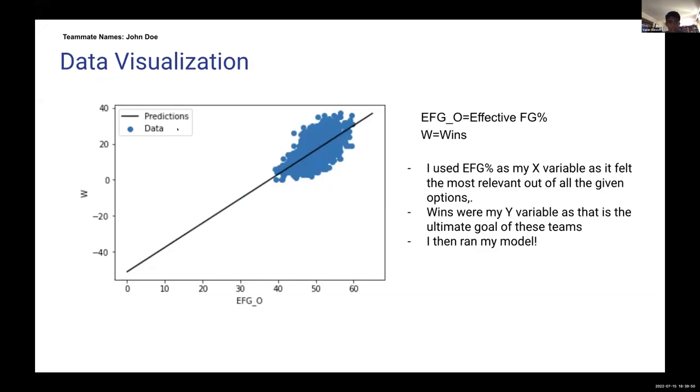So for my visualization, this was my plot with the prediction. And then I used effective field goal percentage as my x variable as it was the most relevant out of all the given options. And then wins were my y variable since that is the ultimate goal of the teams. And then I ran the model.